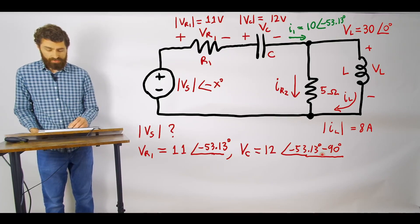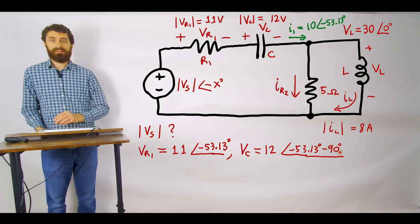we know the phase of the current through the capacitor is minus 53.13 degrees because this is the current but then it's going to, the voltage is going to be lagging by 90 degrees so we have to subtract 90 degrees.